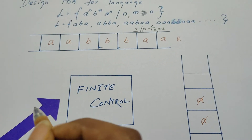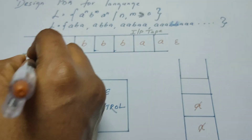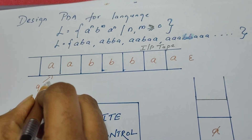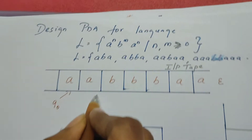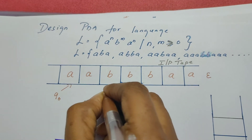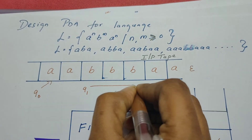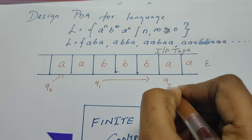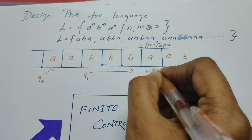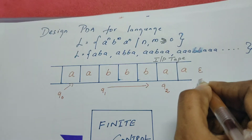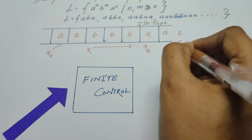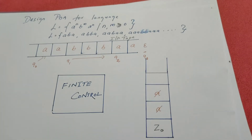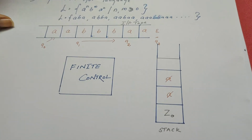Before writing the transition rules, let me explain the change of states. In the beginning, once the PDA starts reading a's it is in state q0 and stays in q0 until it reads b. Once it reads b the state changes to q1 and stays in q1 until it reads another a. Once it starts reading a's again the state changes to q2 and stays in q2 until all those a's are consumed. Once it reads epsilon and the stack is also empty, it enters state q3, which is the final state.